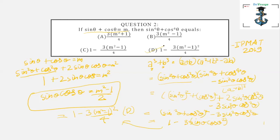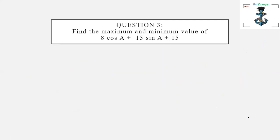So the final answer is 1 − 3(m² − 1)²/4, which is option D. It's a very lengthy question — I wouldn't advise you to attempt it first. Do the easier questions and then come back to this one. D is the answer.